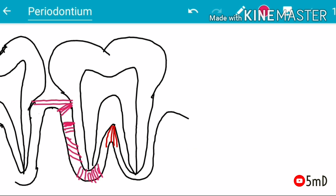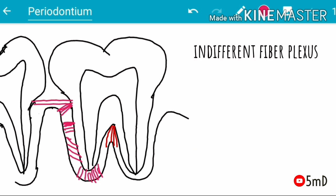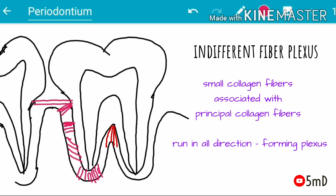There is another plexus known as the indifferent fiber plexus. It consists of small collagen fibers associated with the principal fibers and runs in all directions, forming a plexus.